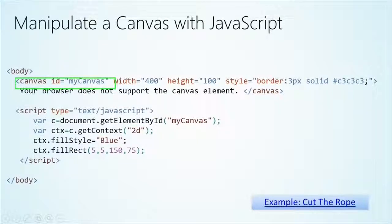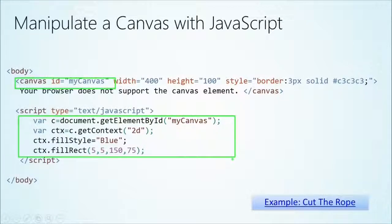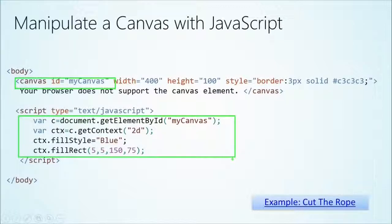Like Christopher did, we assigned an ID to that particular object so that we could interact with it in our code. This simple set of code declares a variable to get the context of that object. And then once we do that, we're able to use that object and begin applying some methods. In this case, we're going to get a fill style method and fill a rectangle with blue. Real simple.